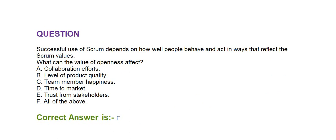Next question: Successful use of Scrum depends on how well people behave and act in ways that reflect the Scrum values. What can the value of openness affect? Option A: collaboration efforts. Option B: level of product quality. Option C: team member happiness. Option D: time to market. Option E: trust from stakeholders. Option F: all of the above. Correct answer is Option F — all of the above.